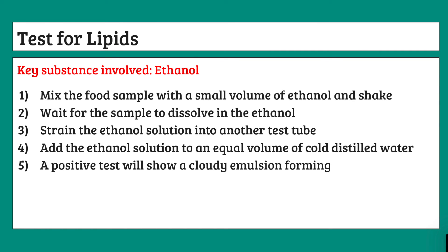Finally, we have the test for lipids, which is technically the most difficult to remember. The key substance is ethanol, but it doesn't work the same way as the others. First, mix the food sample with a small volume of ethanol and shake it, waiting for the sample to dissolve. Then strain the ethanol out into another test tube and add the ethanol solution to an equal volume of cold distilled water. The positive test is that a cloudy emulsion forms — this is a technical term that will get you points in the mark scheme.